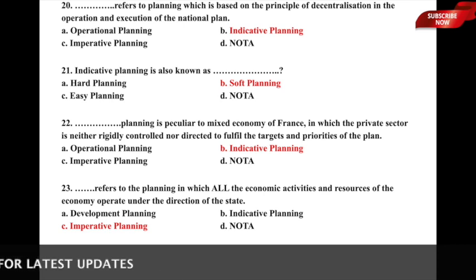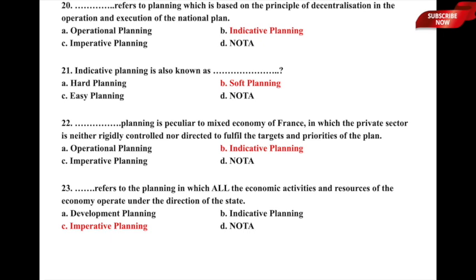Question 23: Dash refers to planning in which all economic activities and resources of the economy operate under the direction of the state — whether it is a) development planning, b) indicative planning, c) imperative planning, or d) none of the above. The correct answer is option c) imperative planning, with examples being socialist economies like China and Russia.